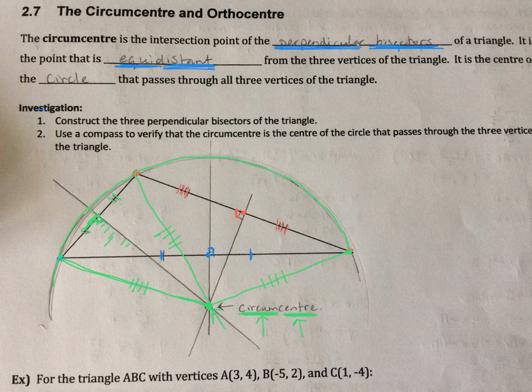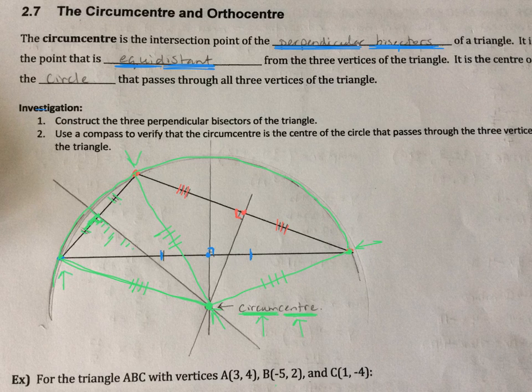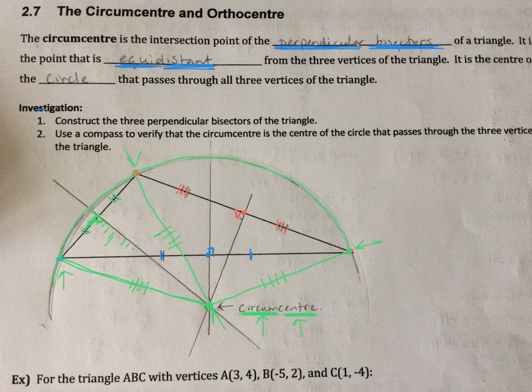Now this can be important again in design because perhaps you have three exits to a parking lot, and you want a spot that's equal distance from those exits. Maybe you want to put a light standard there and shine into the three exits. The circumcenter would be important to find.